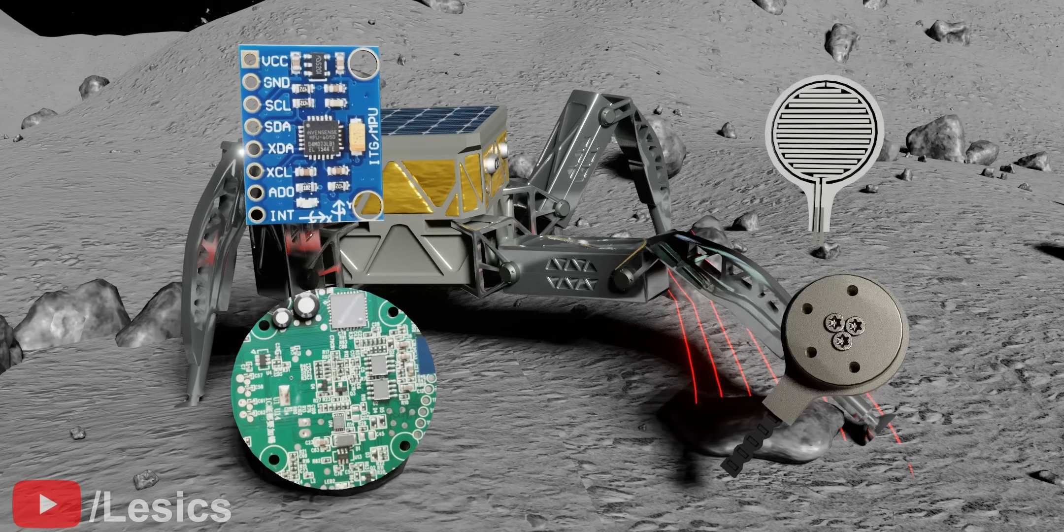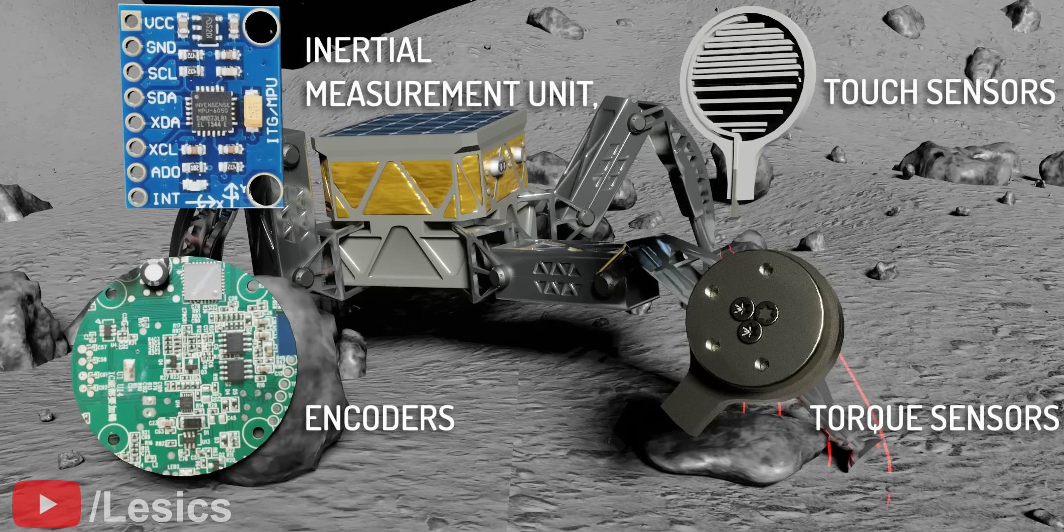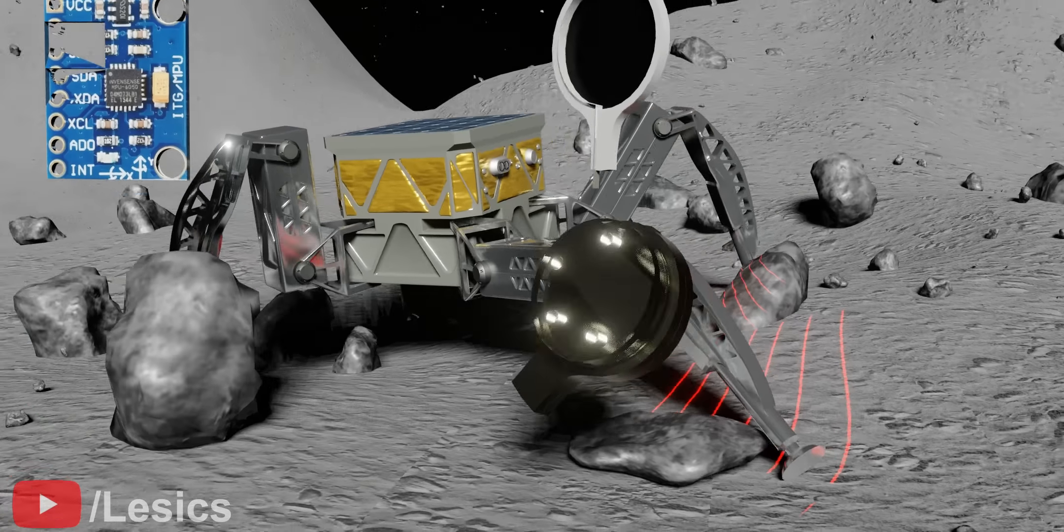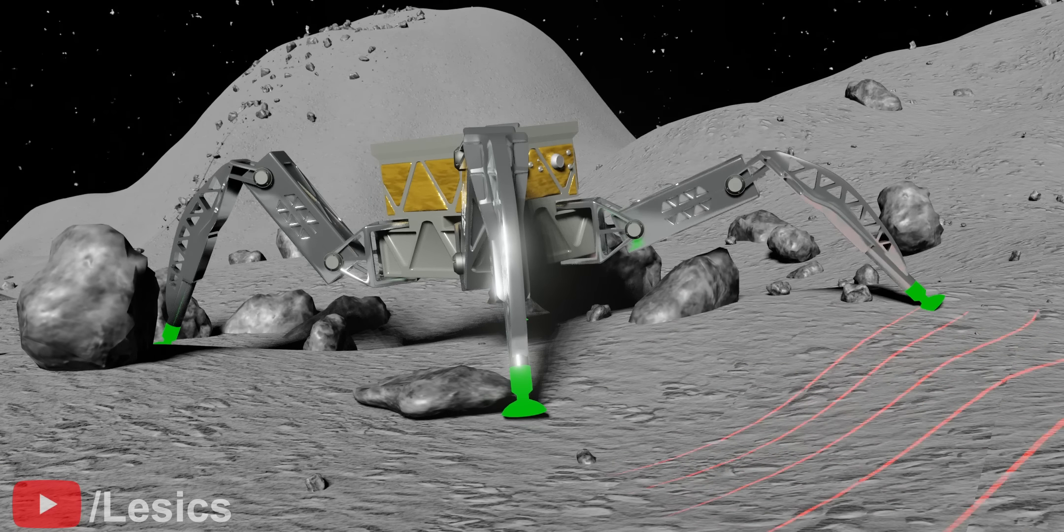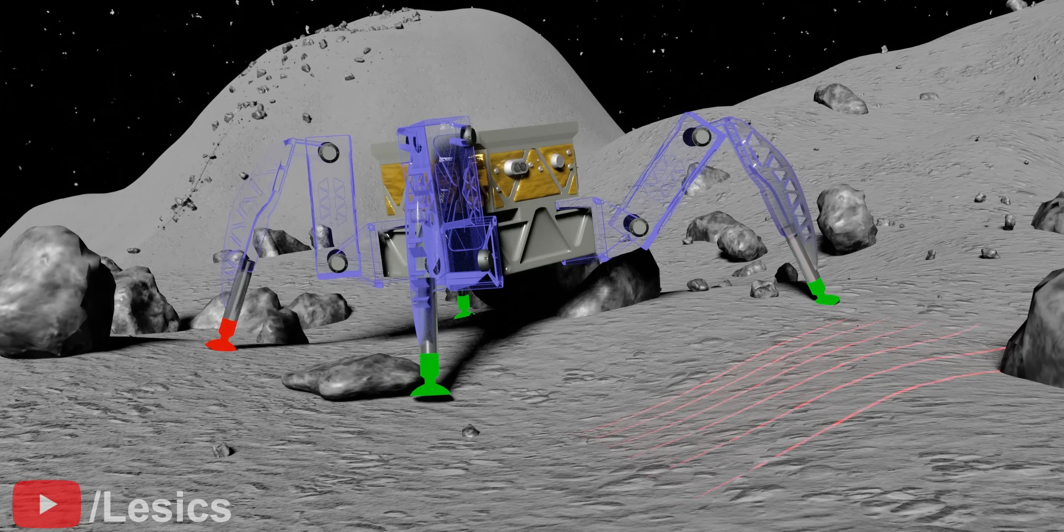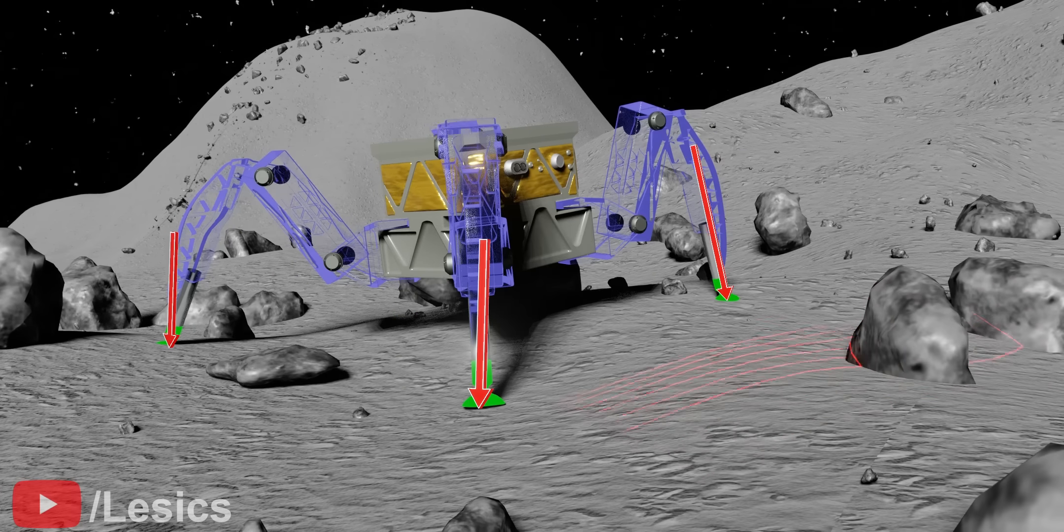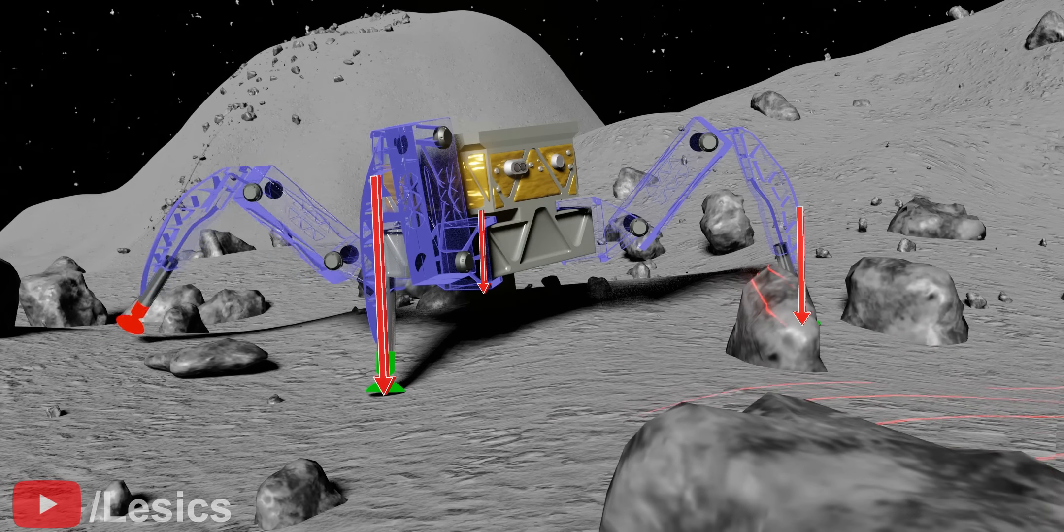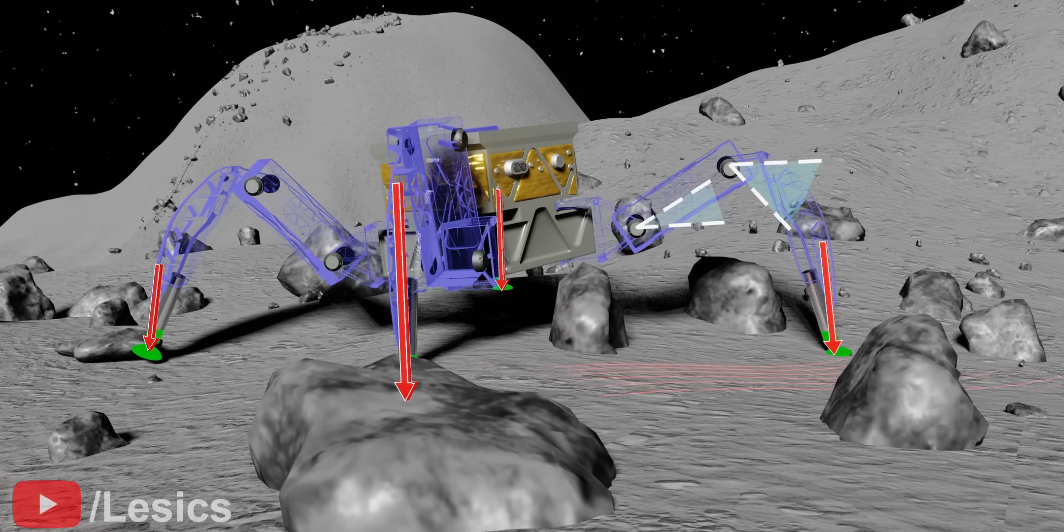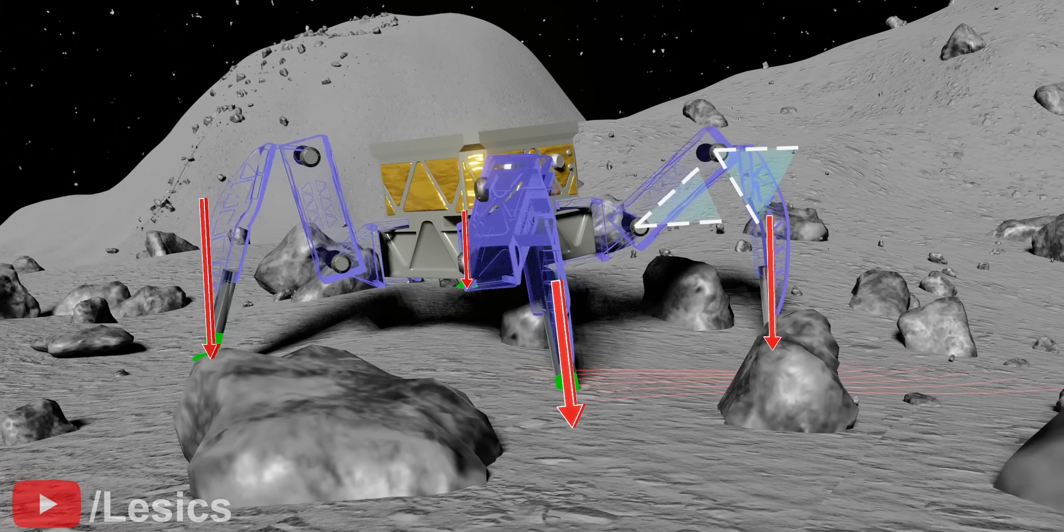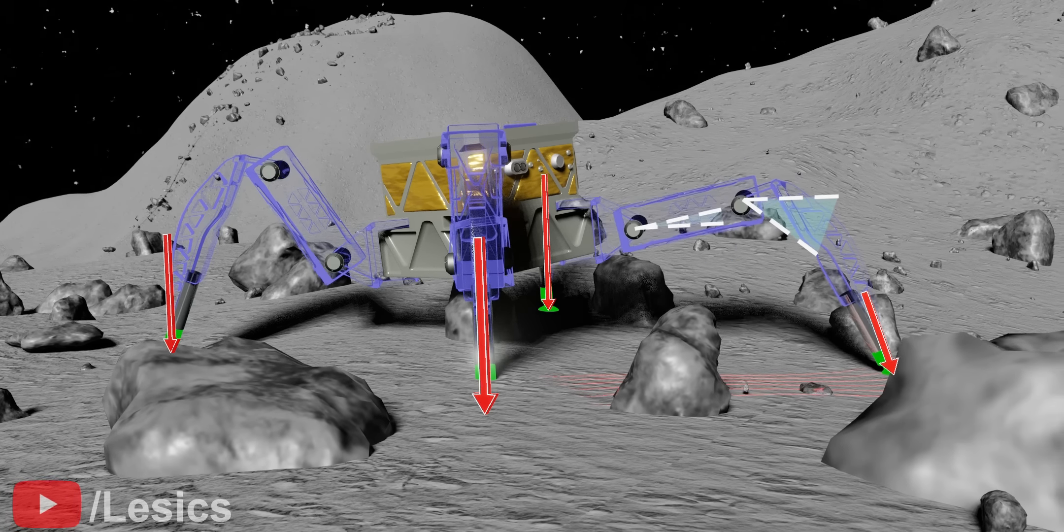The sensors used by the rover for locomotion are the inertial measurement unit, touch sensors on feet, encoders and torque sensors. The touch sensors can tell whether the rover is in contact with the ground or not. The amount of force applied by the ground on the sensors can be estimated using the joint torque sensors. The position of each joint can be given by the encoders. These sensors work together to move the rover forward.